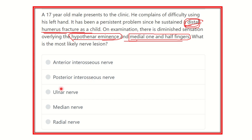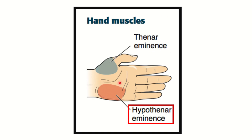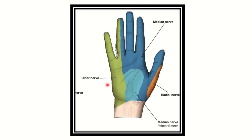The options are: anterior interosseous nerve, posterior interosseous nerve, ulnar nerve, median nerve, and radial nerve. The hypothenar eminence is located in the medial part of the hand. The medial one and a half fingers — this area's nerve supply will be damaged. The hypothenar area and medial one and a half fingers are supplied by the ulnar nerve.